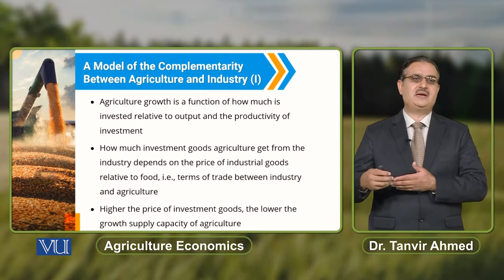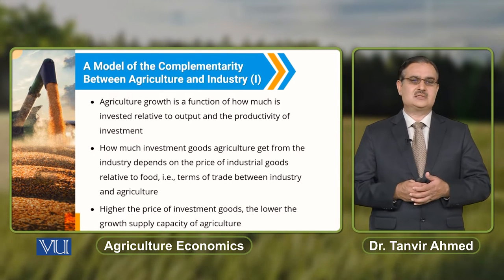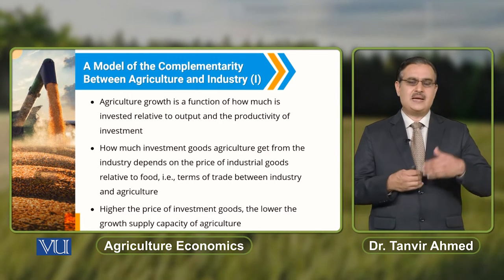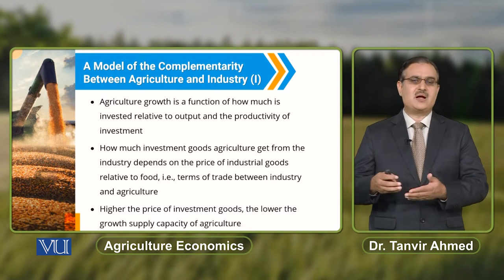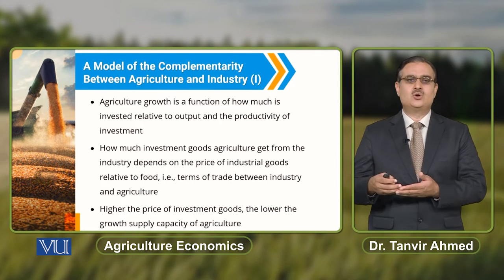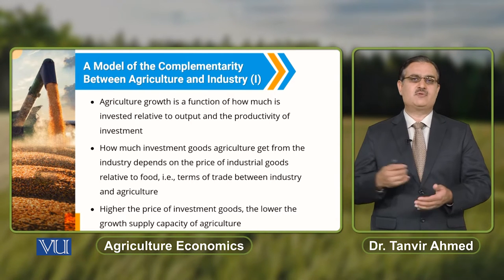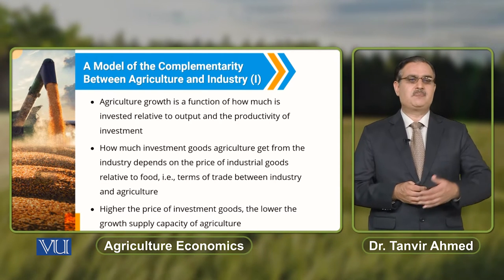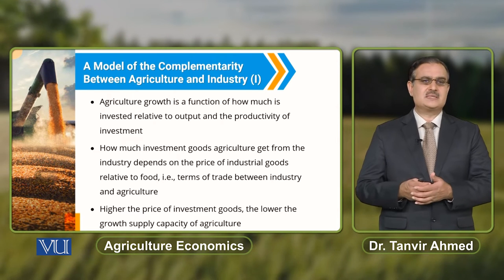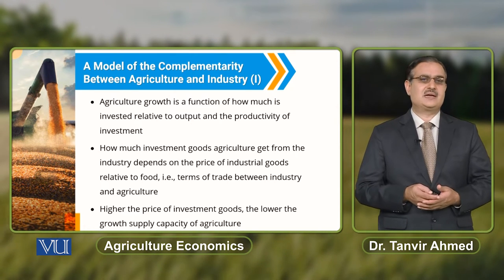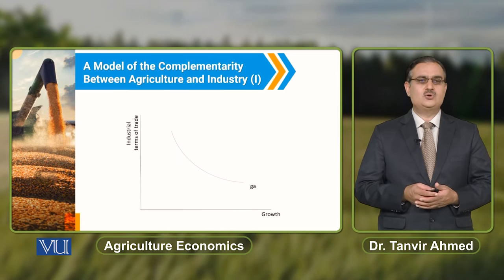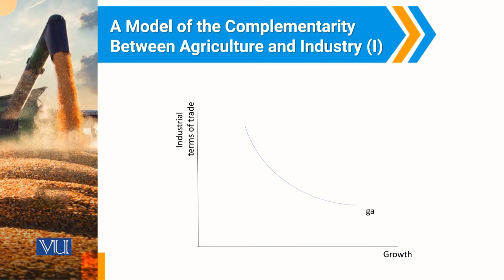When we talk about the terms of trade between industry and agriculture — that is the price of investment goods relative to food — if there are high prices for investment goods, there will be lower growth in the supply capacity of agriculture. There is a negative association between growth in the agricultural sector and industrial terms of trade.